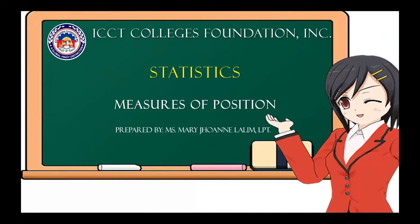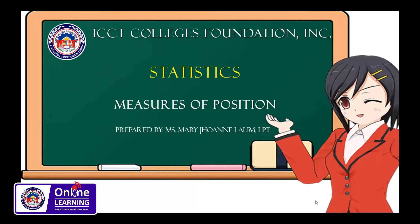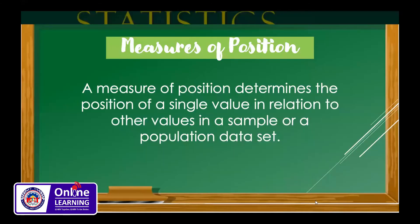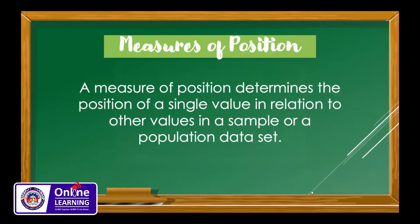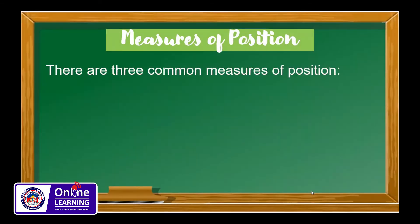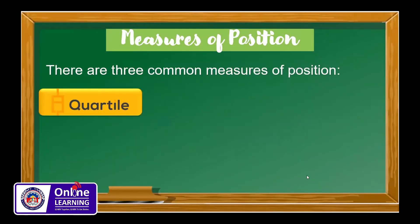For today's video we're going to talk about measures of position. A measure of position determines the position of a single value in relation to other values in a sample or a population data set. In terms of measures of position, we have three common measures: quartile, decile, and percentile.